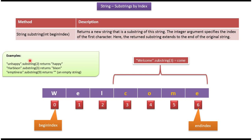Here you can see some more examples of substring. 'Unhappy'.substring with begin index 2 returns 'happy'. 'Harbison'.substring with begin index 3 returns 'byson'. 'Emptiness'.substring with begin index 9 returns an empty string. And this is about substring — thanks for watching.